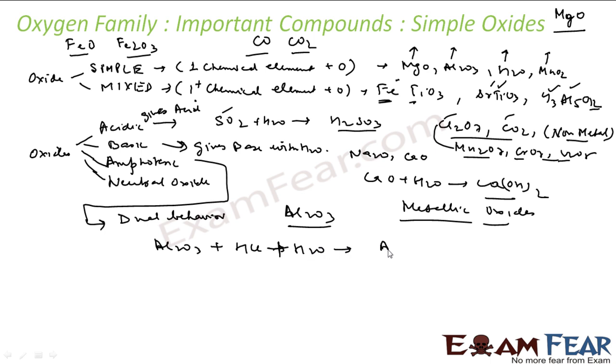The same Al2O3 when you react with some base - a good base can be sodium hydroxide, very popular base - with some water here, you get Na3AlO3. You see, this oxide reacts with both acid and base. These are my amphoteric oxides.